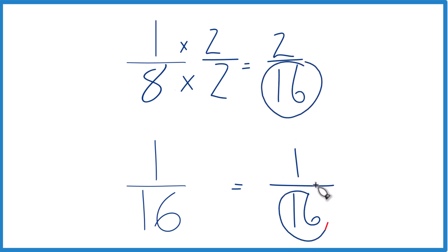But now, since we have sixteen here and here in the denominator, we can compare the numerators. And two, that's greater than one, two-sixteenths, that's greater than one-sixteenth. And one-eighth, that's larger than one-sixteenth as well.